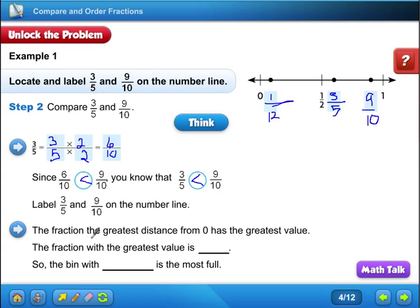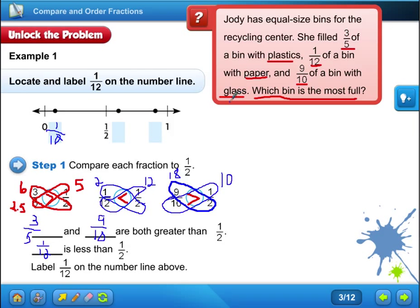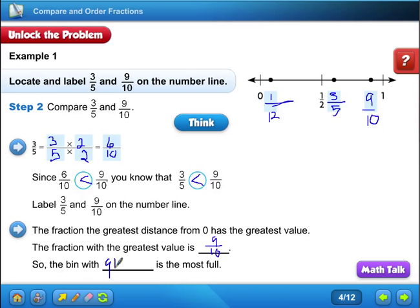So, let's finish out the problem. The fraction, the greatest distance from 0 has the greatest value. So, the fraction greatest from 0. The fraction with the greatest value is, what's the furthest from that 0? 9 tenths. So, the bin with the glass is the most full. The bin with the glass is the most filled. Alright, let's go on to do one more real quick.